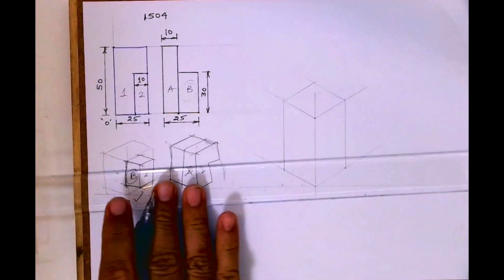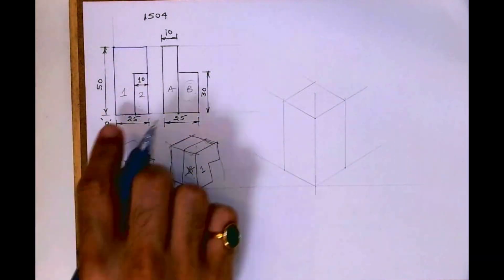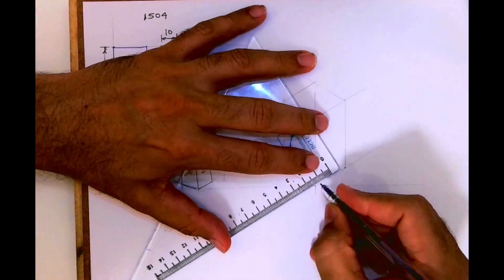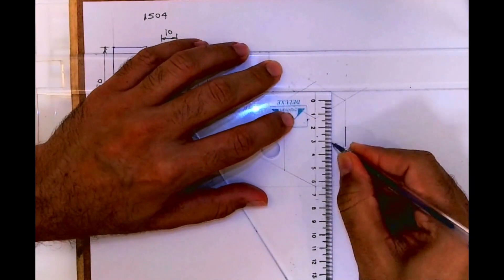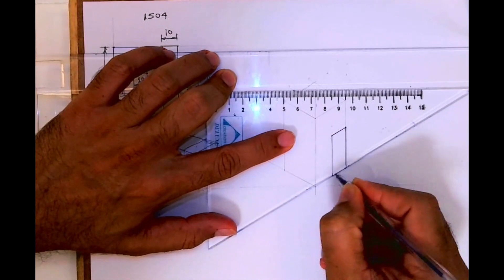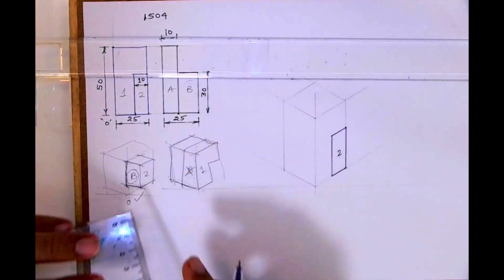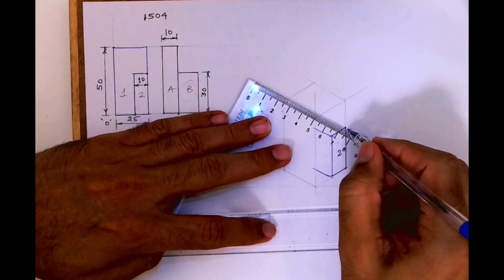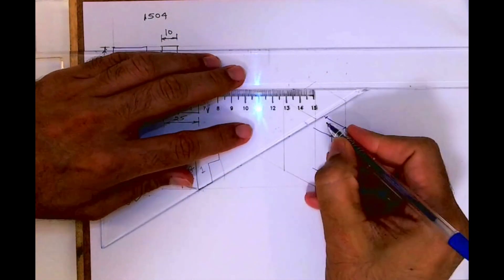I will take part two here. I will leave 15 mm and then start part two. I have to go up by 30 — it will be this way. Then it's going inside by 15 mm. So this is how you will draw part two.